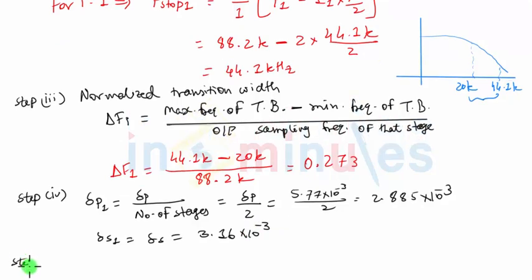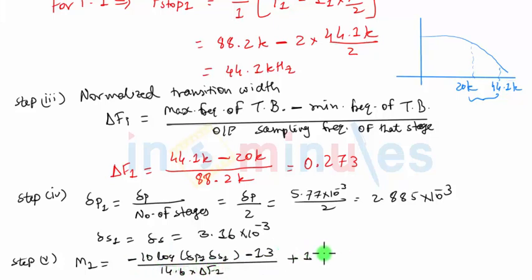So finally step number 5 will be nothing but calculation of the filter length. M1 will have the same formula minus 10 log of delta P1 into delta S1 minus 13. This thing will be divided by 14.6 into delta F1 plus 1. And this will come out to be 11 point something. So we assume M1 to be 12. It will come out to be 10 point something. So we will approximate the length of first filter M1 as 11. So that's the first answer.